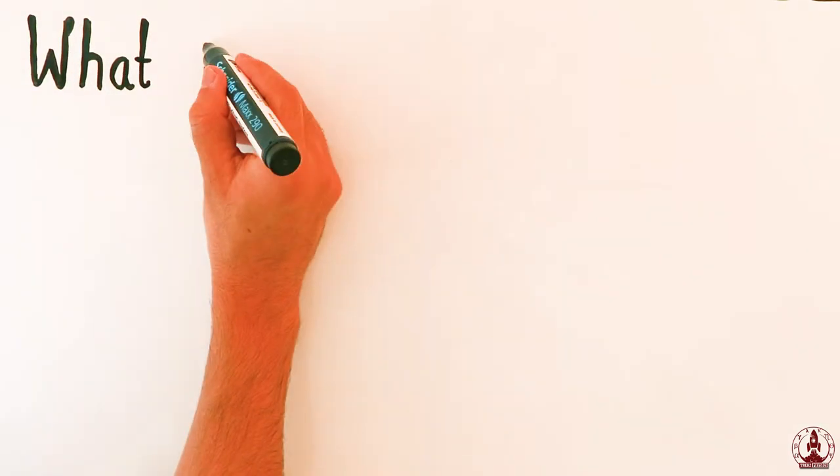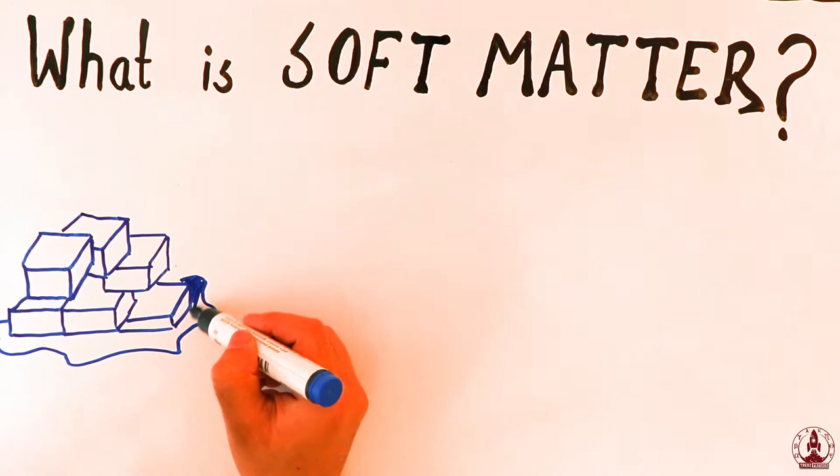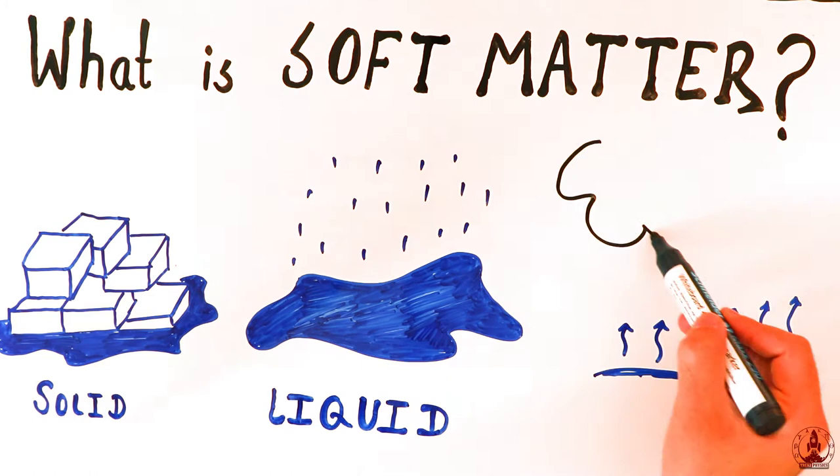What is soft matter? Matter in general can be categorized into hard solid, watery liquid, and blowing gas. Where is the soft matter in this picture?